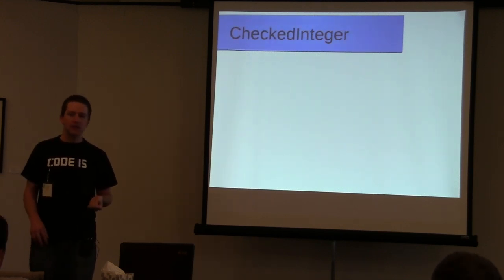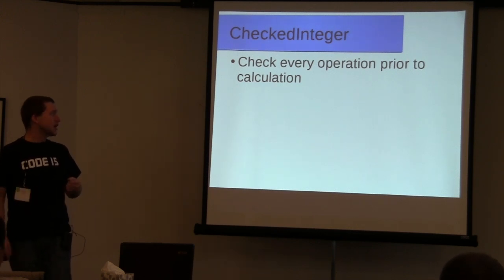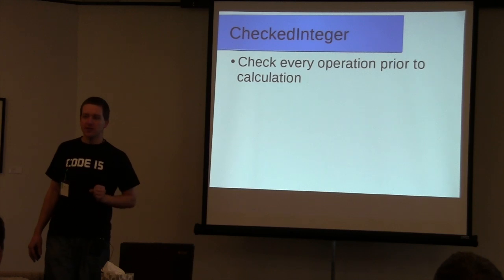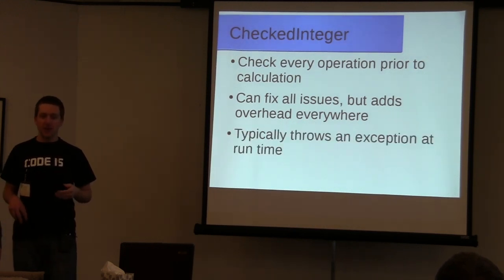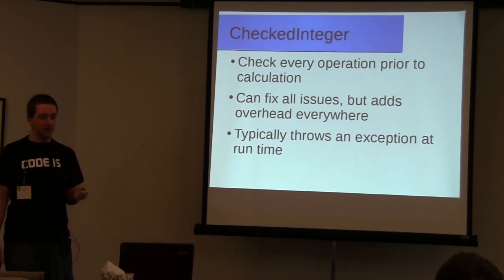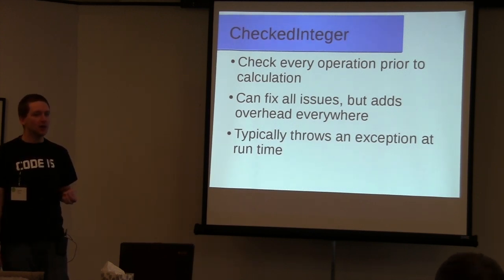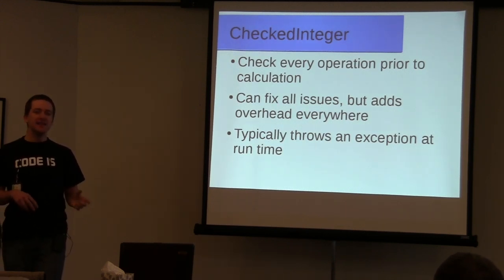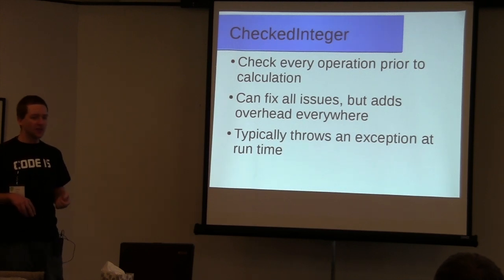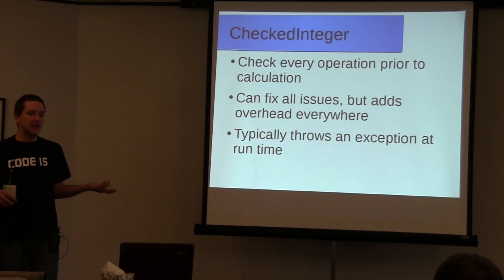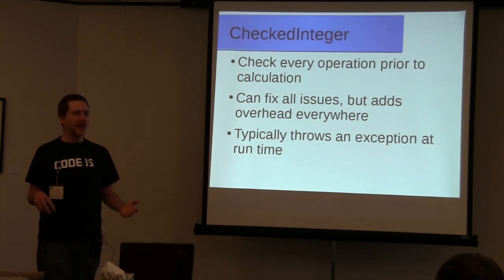A third solution is to create a new type, often called a checked integer. The basic idea is to check every operation prior to calculation — so you add two checked integers, it checks whether they would overflow, and if they would, it typically throws an exception. This can fix all of the issues, but it adds overhead to every operation. For scientific applications or anything dealing with a lot of data or on a constrained system, adding that overflow check can actually be significantly more expensive than the addition itself. So if you're doing a lot of math in a loop, it won't run fast enough for hard real-time constraints.